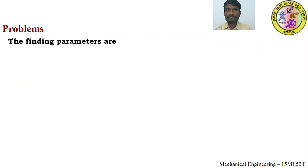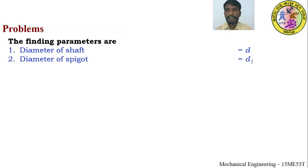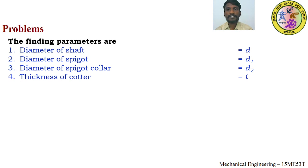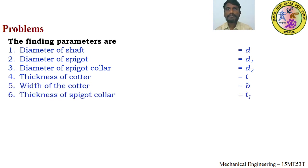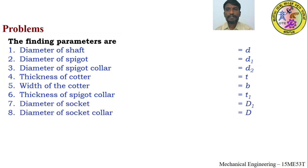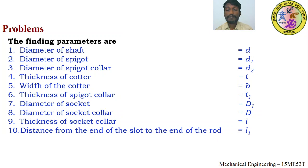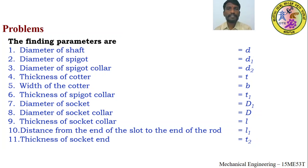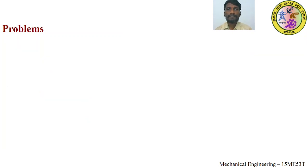Parameters to find: diameter of shaft d; diameter of spigot d1; diameter of spigot collar d2; thickness of cotter t; width of cotter b; thickness of spigot collar t1; diameter of socket D1; diameter of socket collar D; thickness of socket collar l; distance from end of slot to end of rod l1; and thickness of socket end t2.